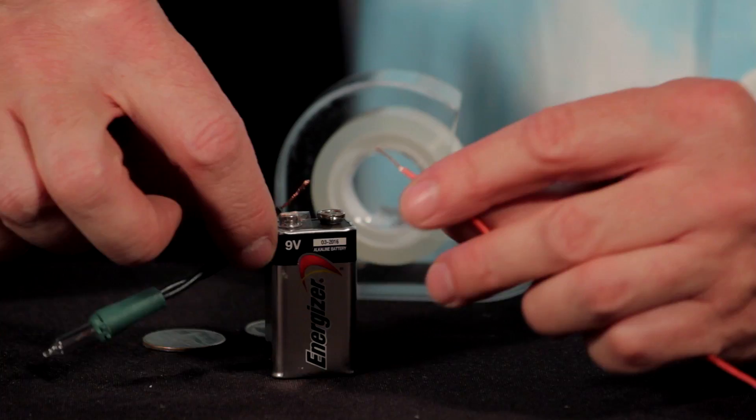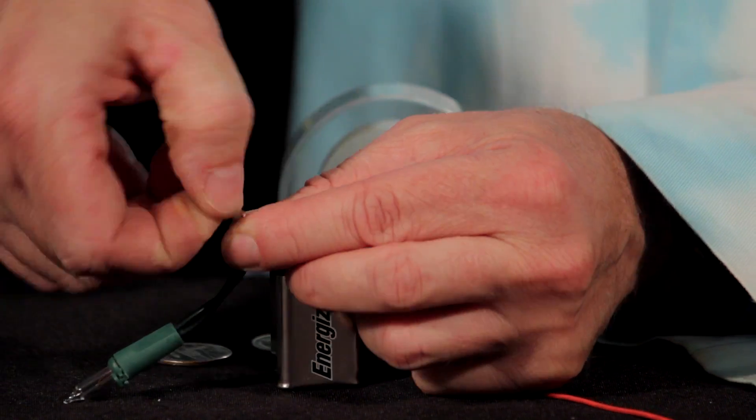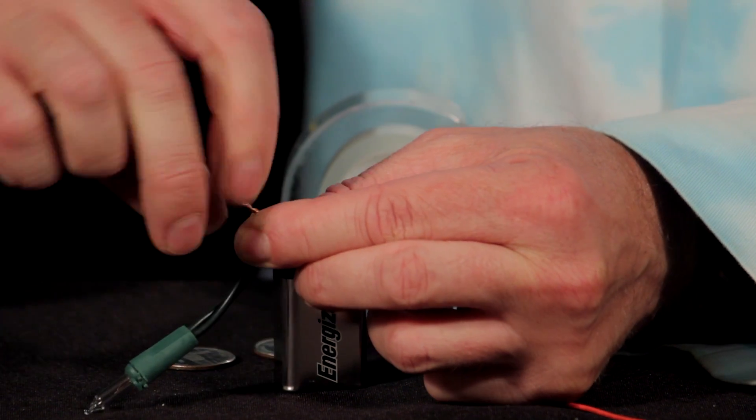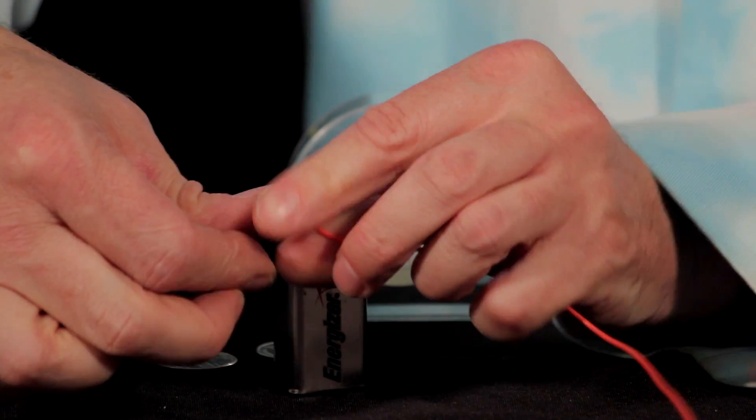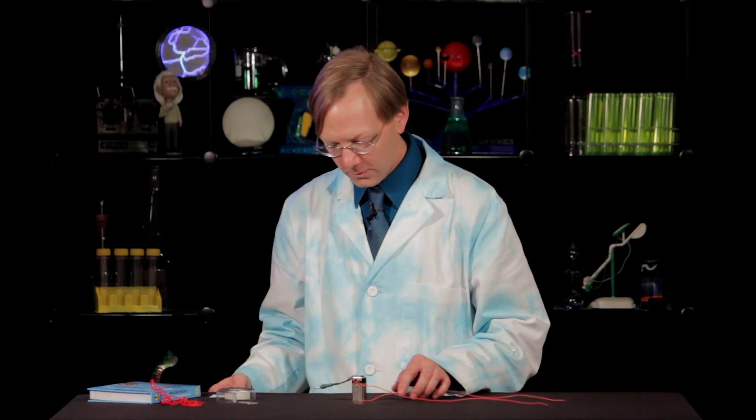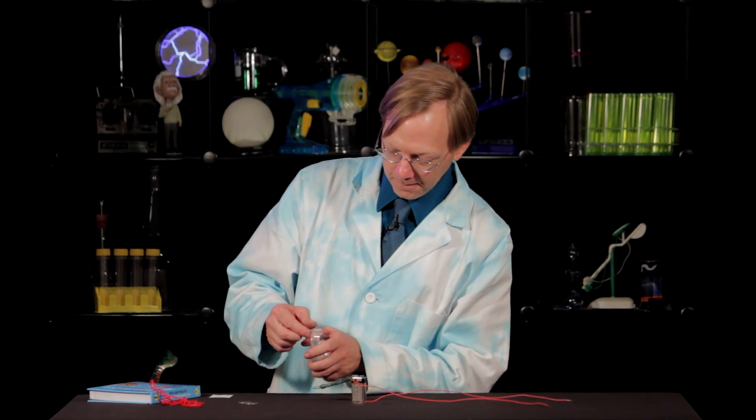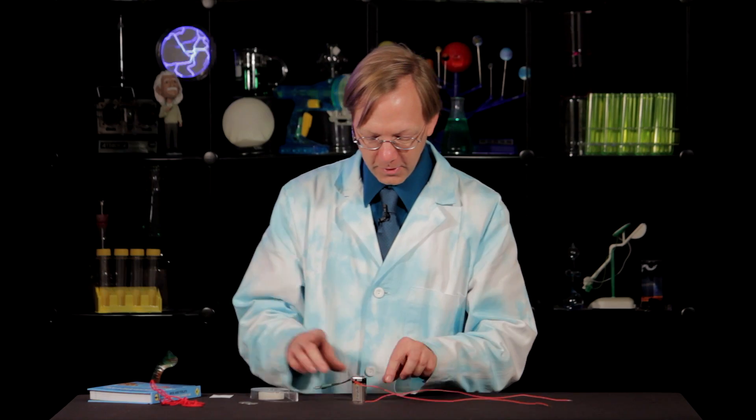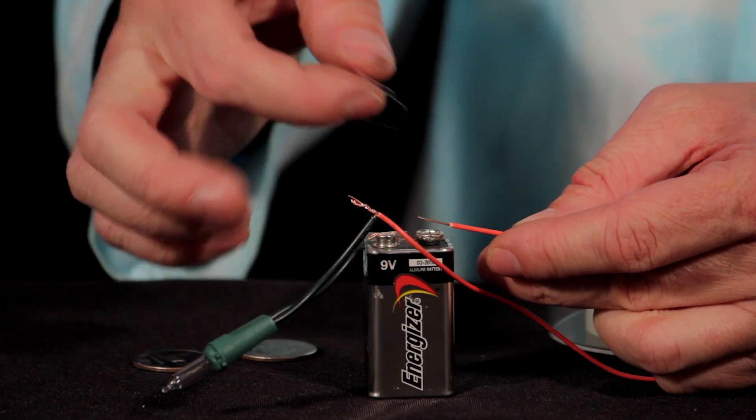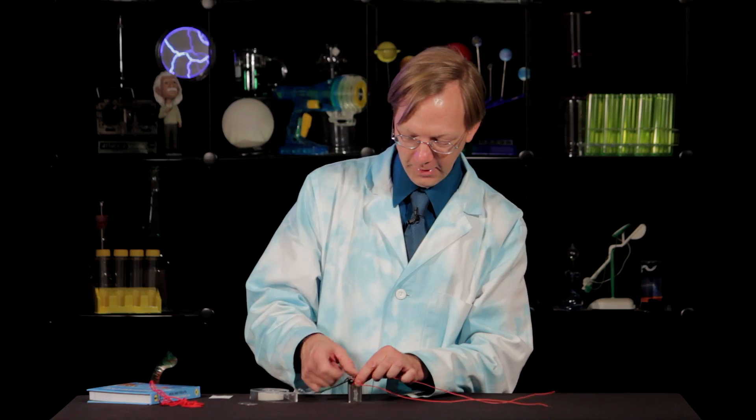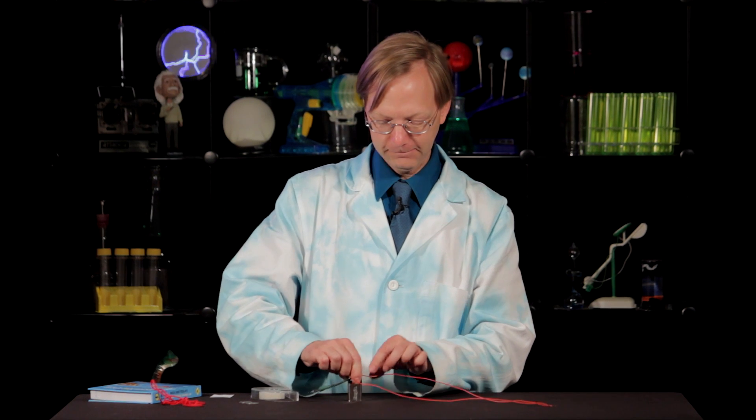Your first step is to attach one end of your wire to the other end of the Christmas light that has nothing attached to it, like that. The next one, we want to grab a piece of tape and we're going to tape the second wire to the second lead of the battery that doesn't have a wire on it. All right, terrific.